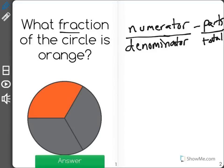So as you can see in this problem, that's asking what fraction of the circle is orange. The numerator would be how many orange pieces there are, and the denominator would be how many total pieces.